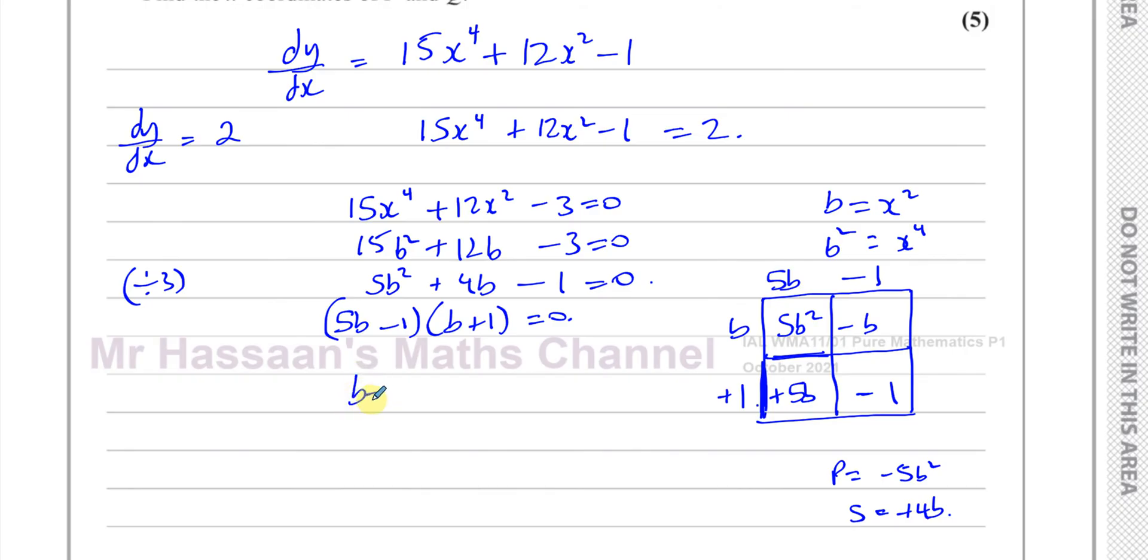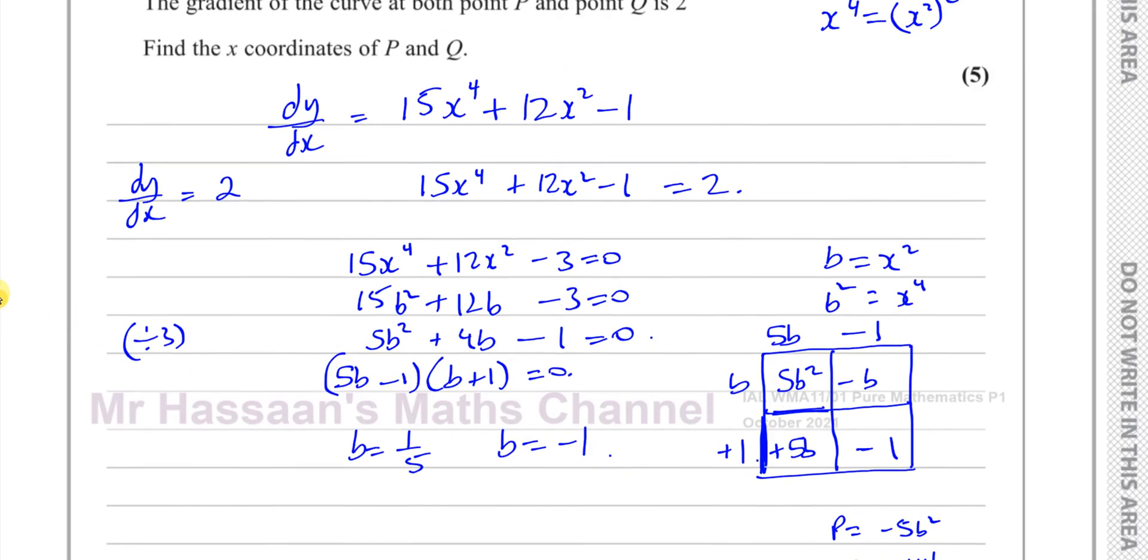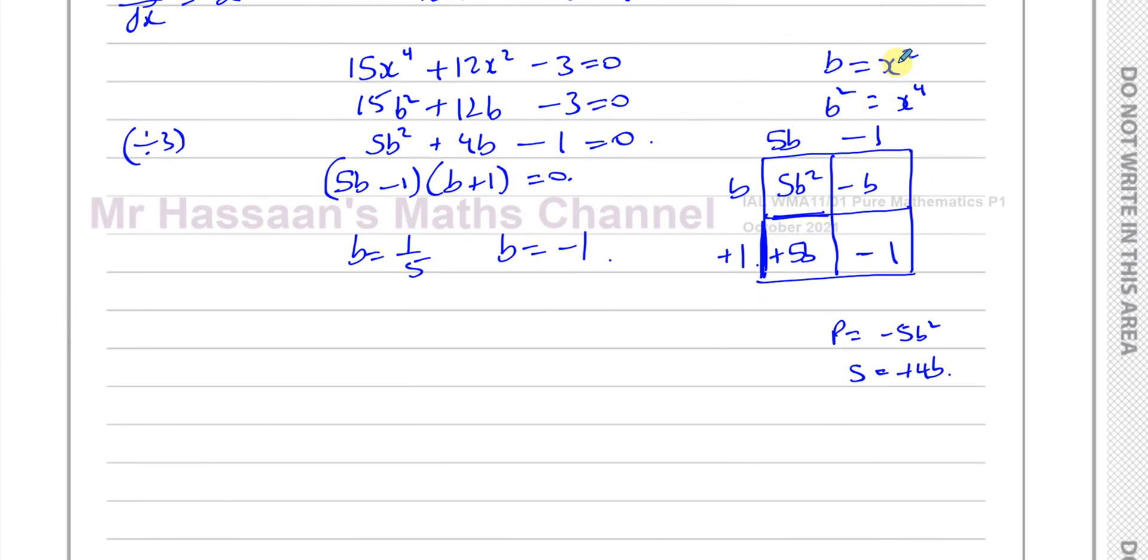So we can say b equals 1 over 5, and b equals negative 1. We know that x squared equals b. So this is x squared equals 1 fifth, and x squared equals minus 1.